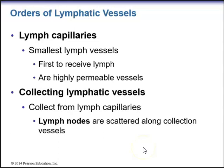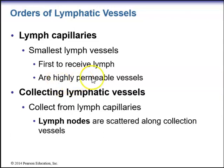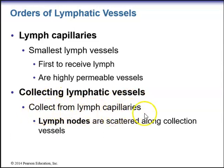The different types and orders of lymphatic vessels: the smallest lymph vessels are the lymph capillaries. These vessels are the first to receive lymph and are highly permeable vessels, meaning they allow substances to pass through their walls. Next we have our collecting lymphatic vessels, which collect from lymph capillaries.